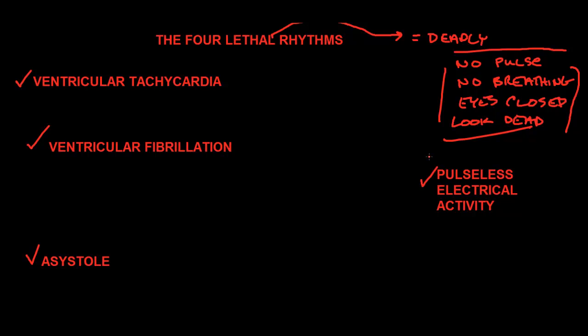We have information, recordings, videos, and articles on each of these. Right now we're just going to do a brief overview of all of them as a whole. Generally what happens is that someone will go into either VTAC or ventricular fibrillation, which causes immediate signs and symptoms — they'll be talking to you one minute, and the next they may say they're having trouble breathing or their chest hurts, and then boom, they're on the ground.